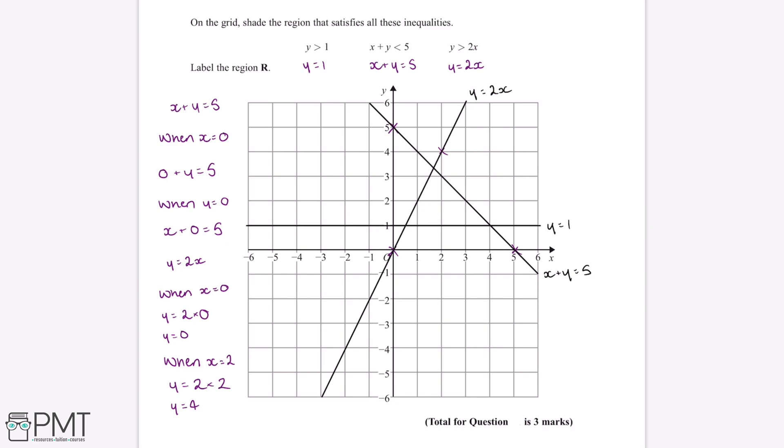So we've drawn on all the lines we need to draw onto this grid. So now the final thing we need to do is work out which region is R. So the first inequality we've been given is y is greater than 1. So the region in which y is greater than 1 will be anywhere above the line y equals 1.